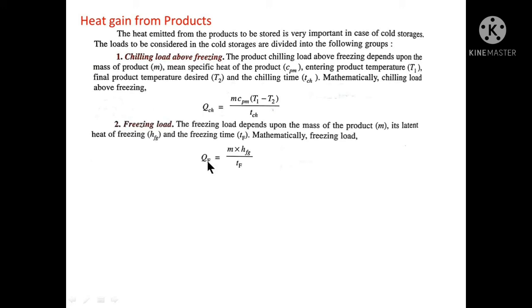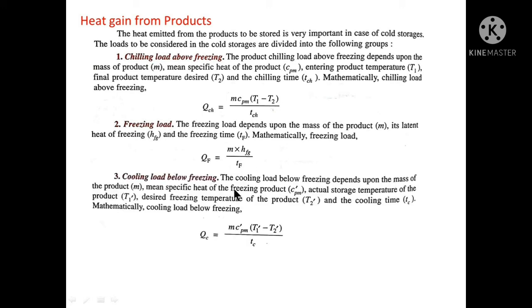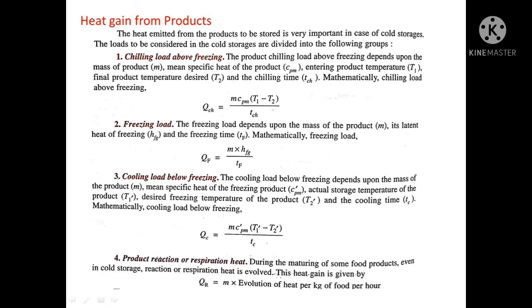Next is the freezing load, given by QF = M·HFG / TF. Next is the cooling load below freezing, given by QC = M·C'PM·(T1' − T2') / tCH. Next is the product reaction or respiration heat — during the maturing of some food products, even in cold storage, reaction or respiration heat is evolved. This heat gain is given by QR = M × heat evolution per kg of food per hour.